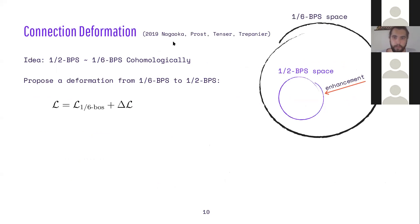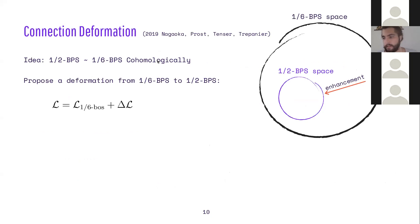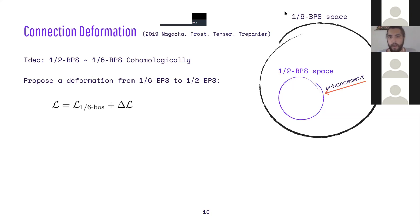This brings us to my work with Penati and Trépanier. The key observation is that the half-BPS and the 1/6-BPS loops are homologically equivalent. This is important because it means the matrix model from localization collapses to the same matrix model — they have the same expectation value. Since they are in the same homology class, we propose a space of 1/6-BPS loops with an extra parameter that parameterizes a family interpolating between 1/6-BPS phases and enhancing to the half-BPS case for some limit of the parameters.